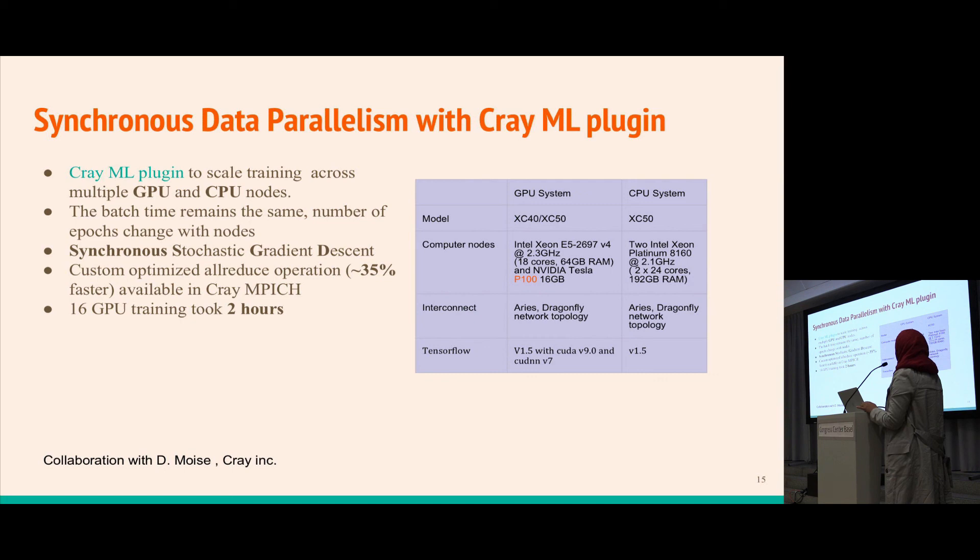With synchronous data parallelism using the Cray ML plugin, scaling was done across different GPU and CPU nodes. The batch time remains the same and the number of epochs needed for convergence decreases with the number of nodes. Synchronous SGD was used and the Cray ML plugin has custom optimized all-reduce operations reported to be about 35% faster. The 16 node training took only two hours.